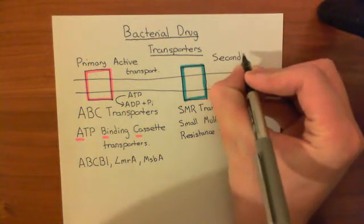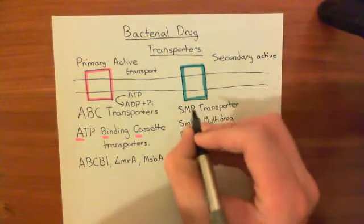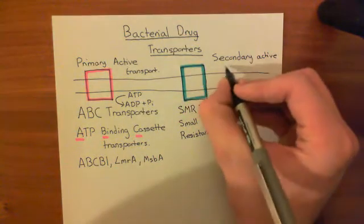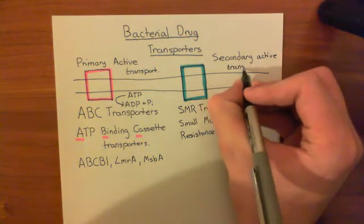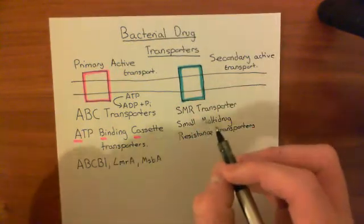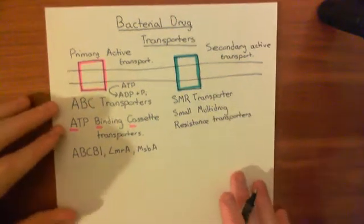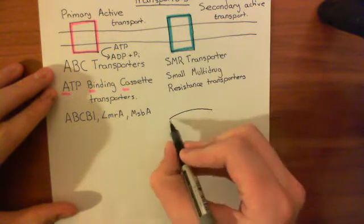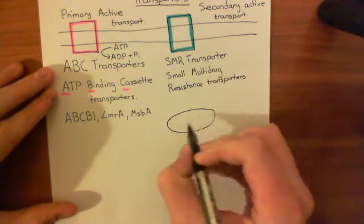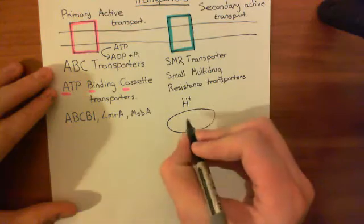In secondary active transport, you do not get the energy for moving the drug molecule from ATP. Instead, you couple the movement of the drug molecule out to the movement of another ion down its concentration gradient. The ion we couple it to is protons. In bacterial cells, the proton concentration inside the cytoplasm is very low, whereas the proton concentration on the outer aspect of the membrane is very high.